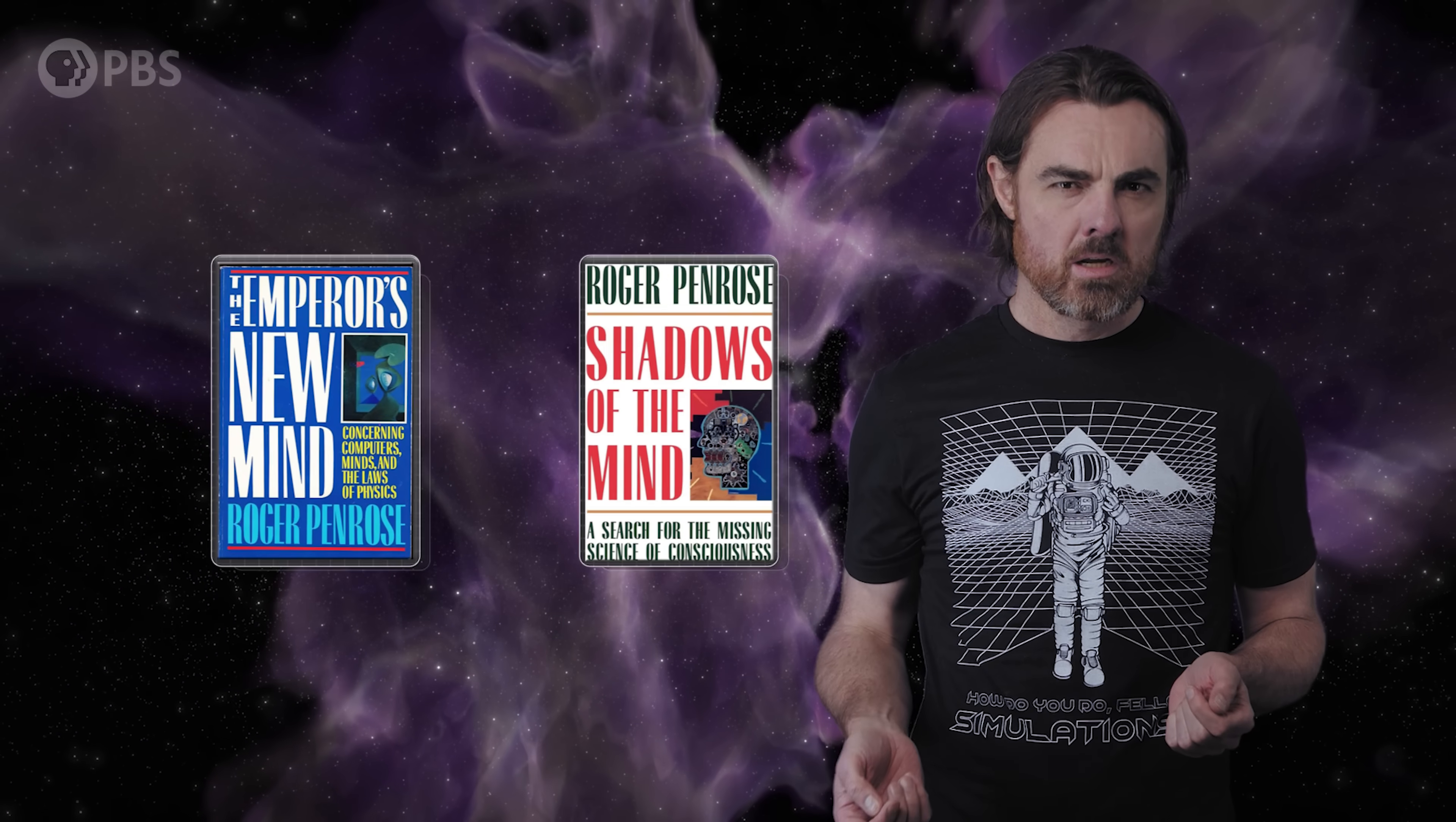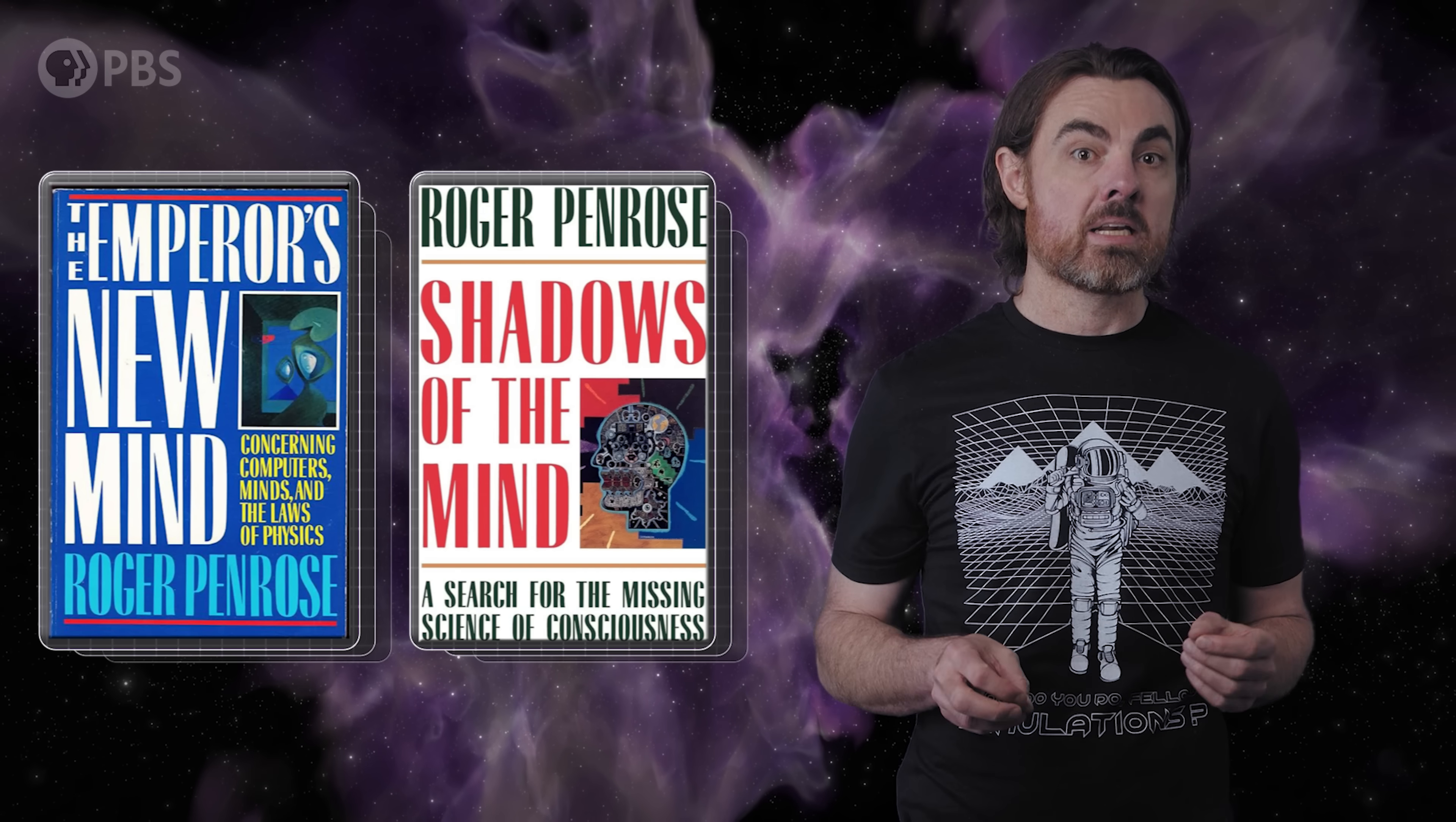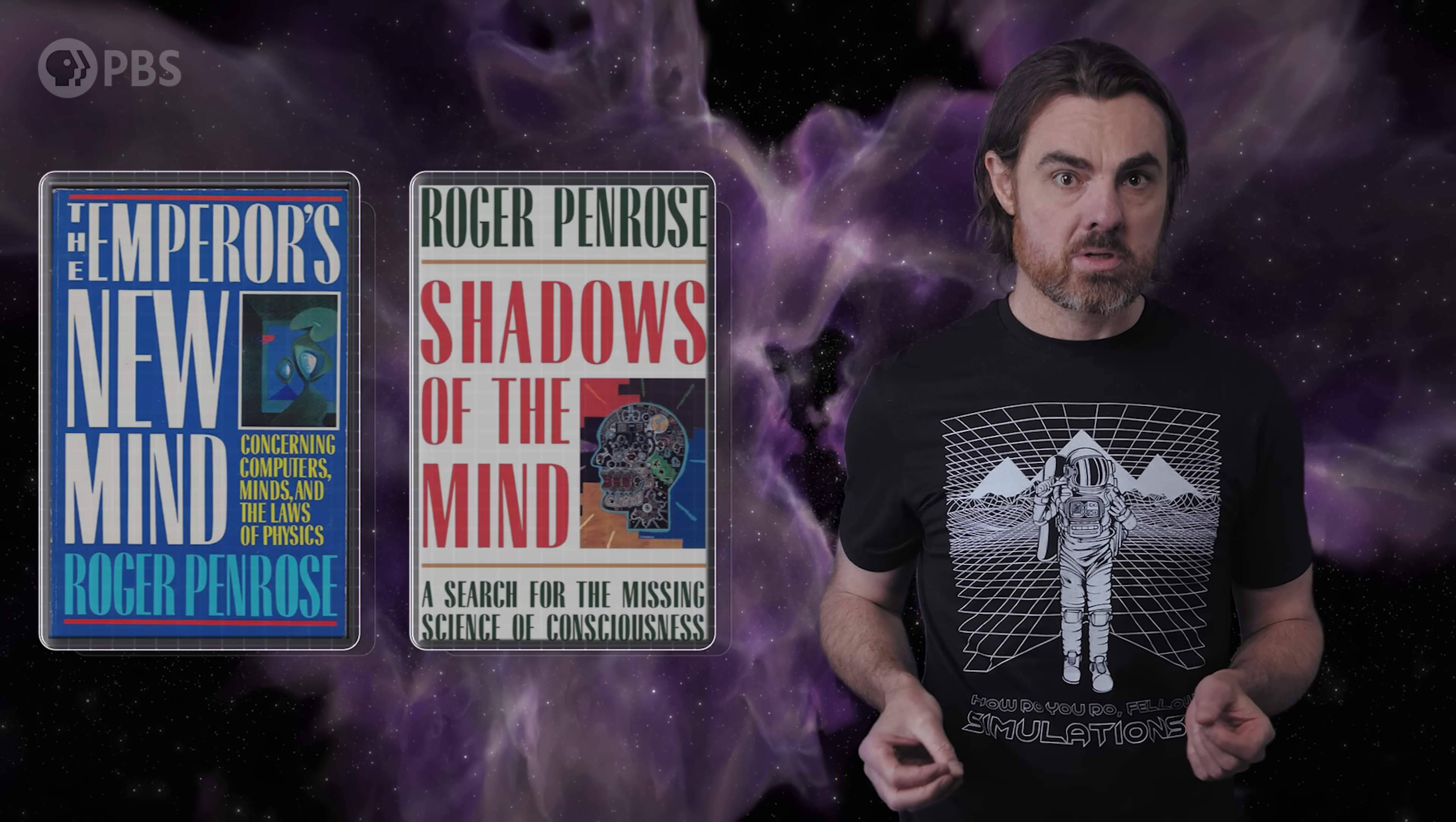There are plenty of objections to this argument. For example, that it's a mistake to equate our sense of knowing to a formal proof. After all, it's possible to think you know something but be wrong. Or that even if we do have super Gödel reasoning abilities, it's a stretch to connect that to consciousness. We'll leave it to you to check out Penrose's books The Emperor's New Mind and Shadow of the Mind for further details if you're interested.